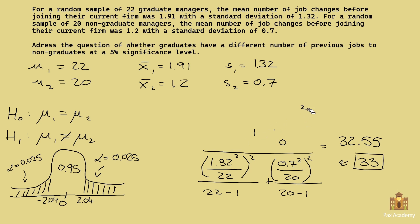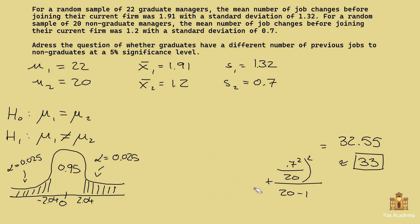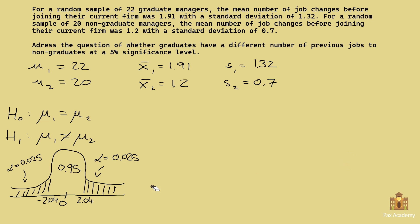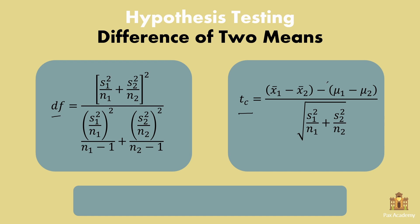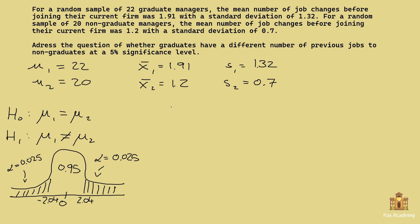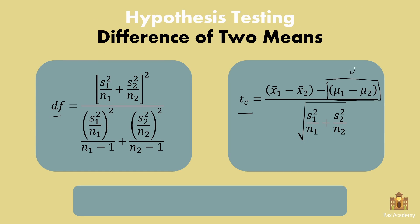Now we need to find the calculated T value, which will tell us whether to reject H0 or accept it. In the second formula there is a term mu1 minus mu2. Students often ask how to find this — you get it from the null hypothesis. Since H0 states mu1 equals mu2, we can rearrange to say mu1 minus mu2 equals 0. So this term is simply 0, which simplifies the formula.